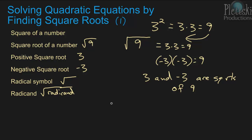The only exception to this would be the square root of 0, because the square root of 0 is just going to be 0. It doesn't matter if it's positive or negative — 0 can't be positive and it can't be negative.